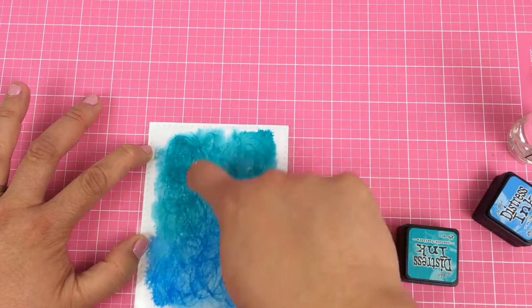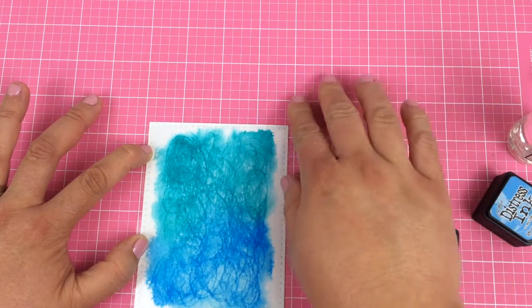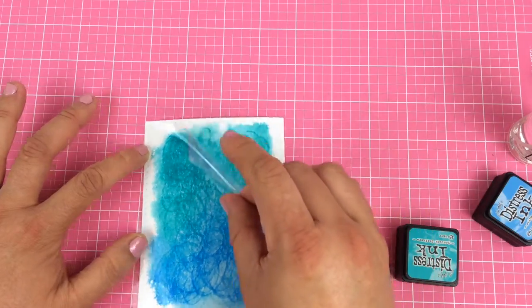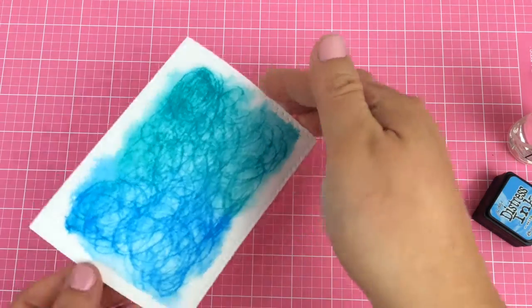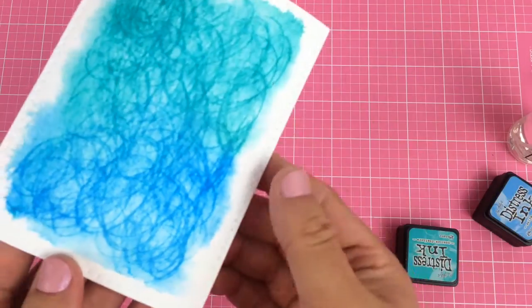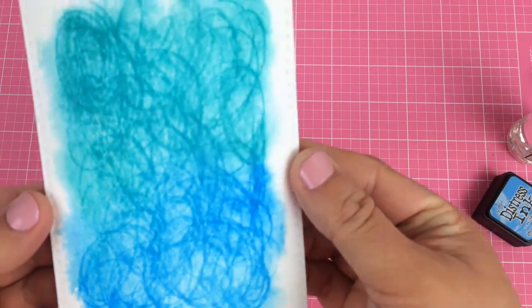All right, I'm happy with that, so I'm going to peel off the plastic piece. I don't know if the camera's picking up well, but can you see that awesome scribbling texture? Isn't that awesome?